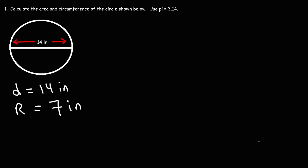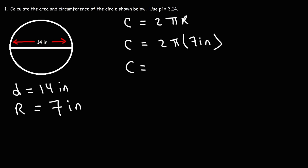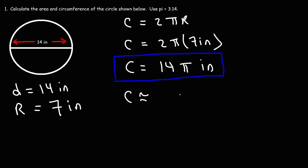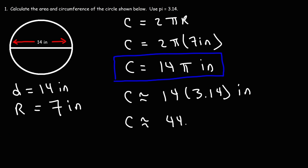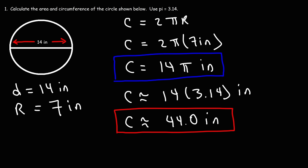Now let's calculate the circumference. The circumference is 2 pi R. Replacing R with 7 inches: 2 pi times 7 gives an exact answer of 14 pi inches. Replacing pi with 3.14: 14 times 3.14 is 43.96. Rounding to three significant figures, the circumference is approximately 44.0 inches.